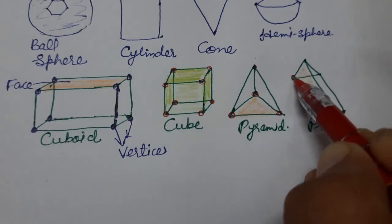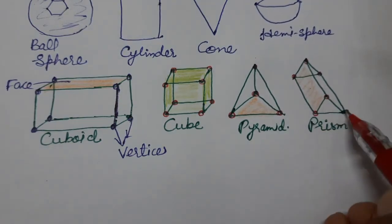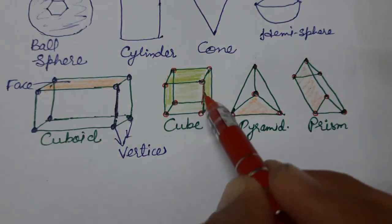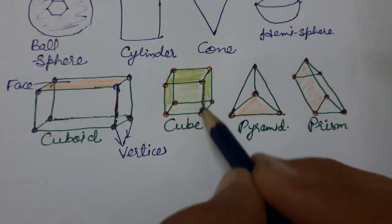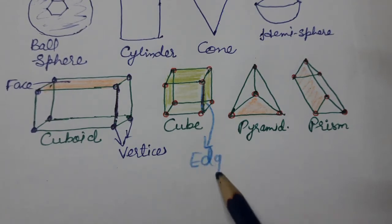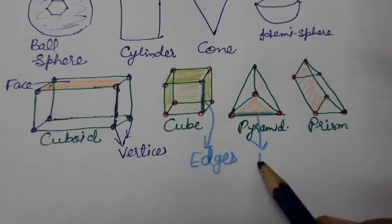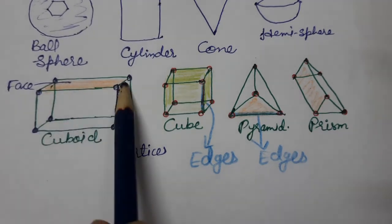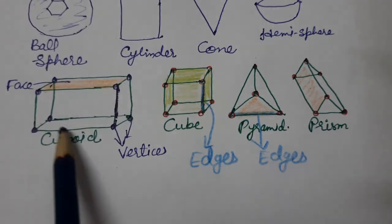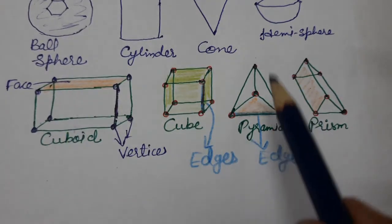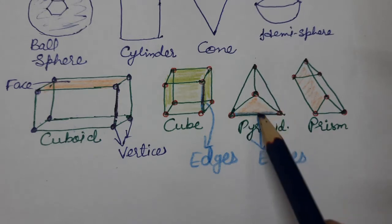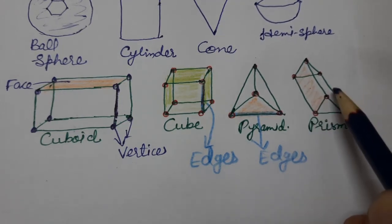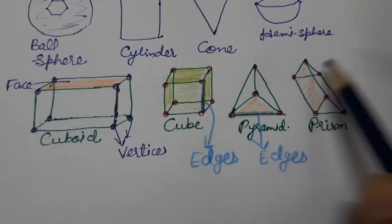The line joining two vertices is called an edge. In a cuboid, you can count the edges: one, two, three, four, five, six, seven, eight, nine, ten, eleven, twelve — so there are twelve edges in a cube and cuboid. A pyramid has six edges, and a prism has eight edges.